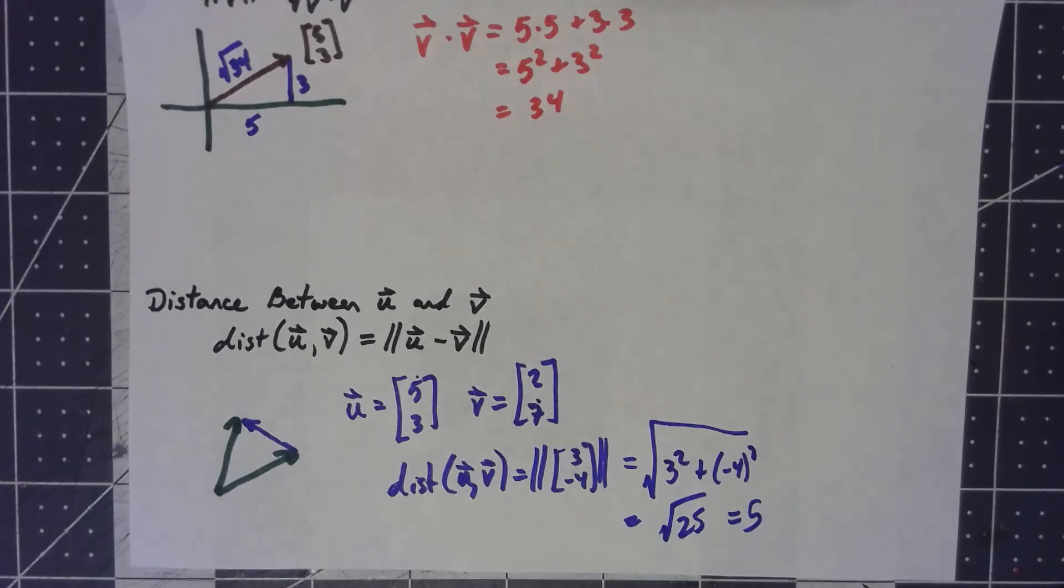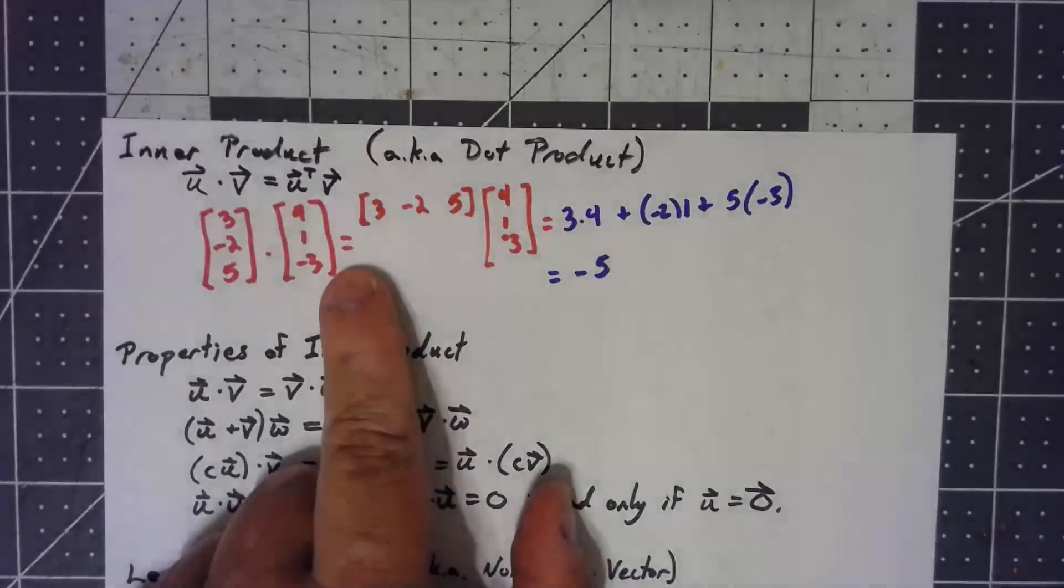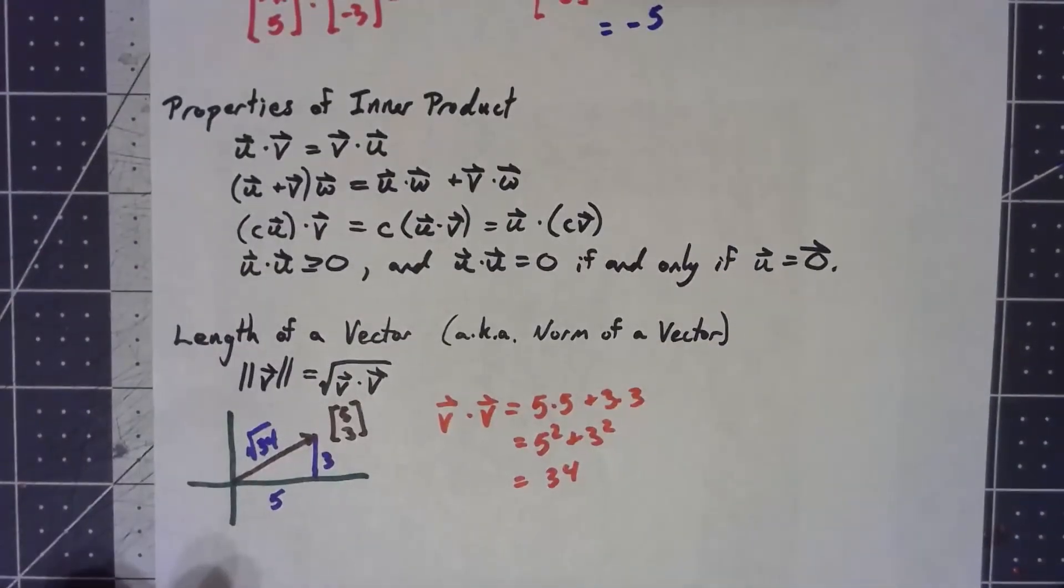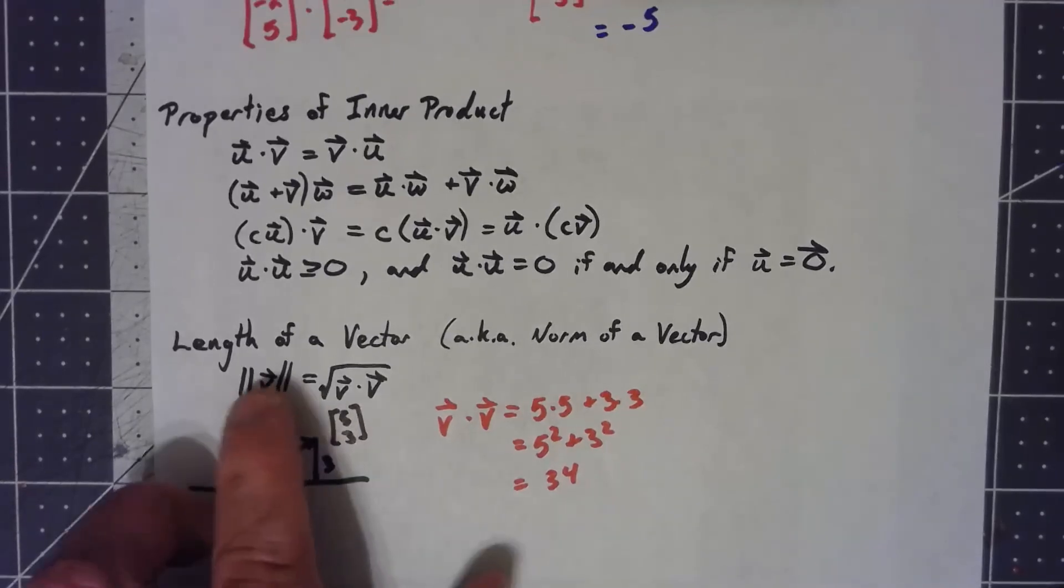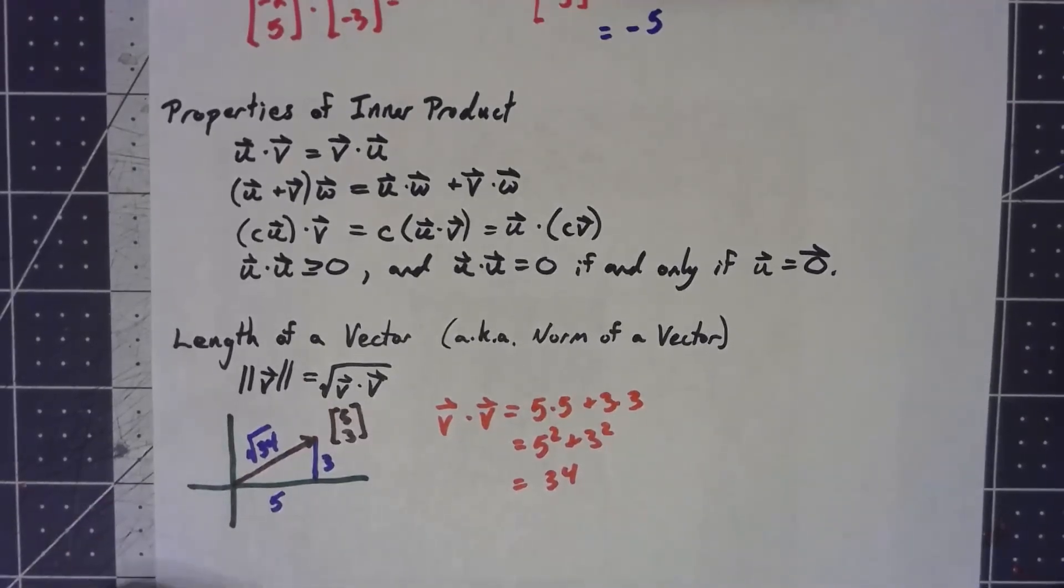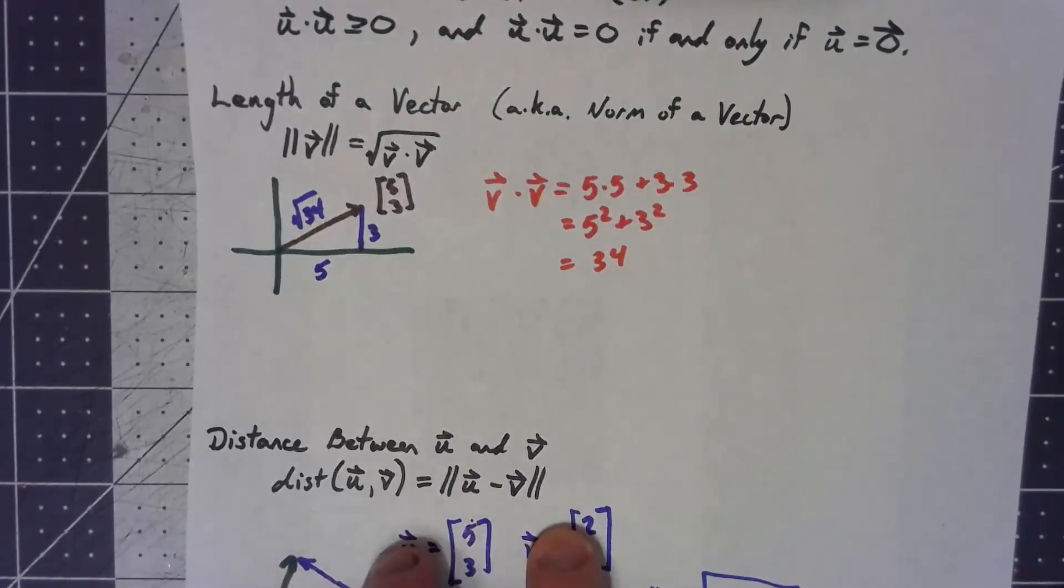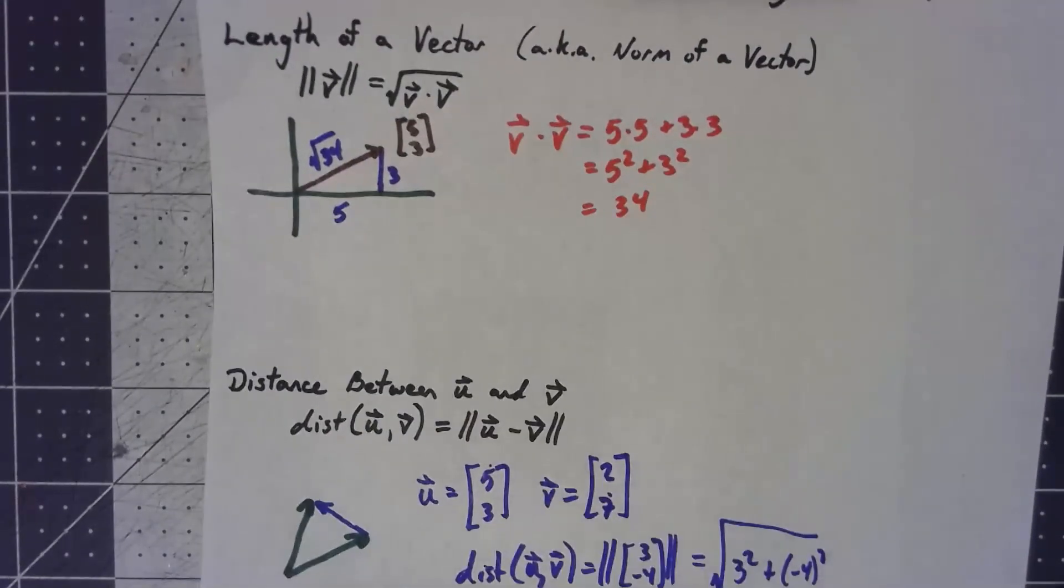A bunch of different ideas here, but they're all pretty simple, all based on this dot product. There's some basic properties, which are pretty much what you'd expect. You take the square root of a vector dotted with itself to get its length, and then you take this norm of the distance, the norm of the difference to get the distance between them.